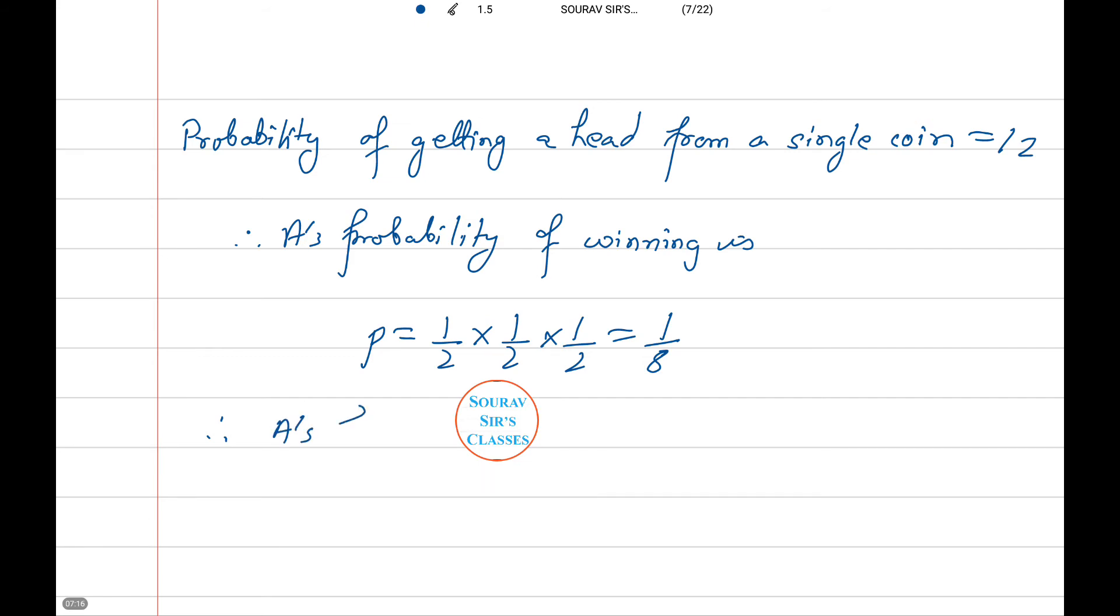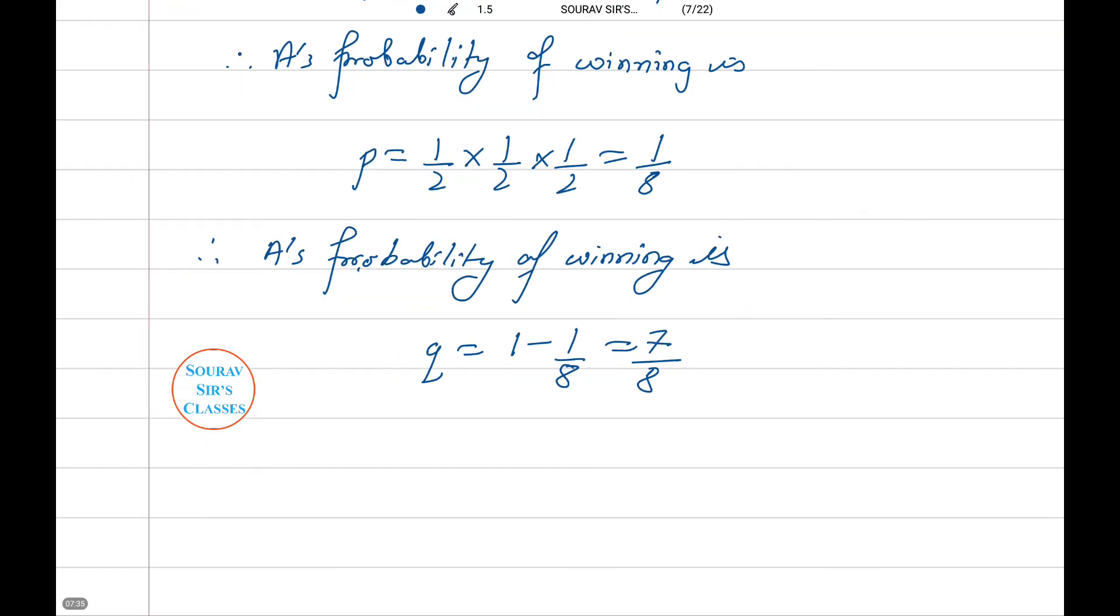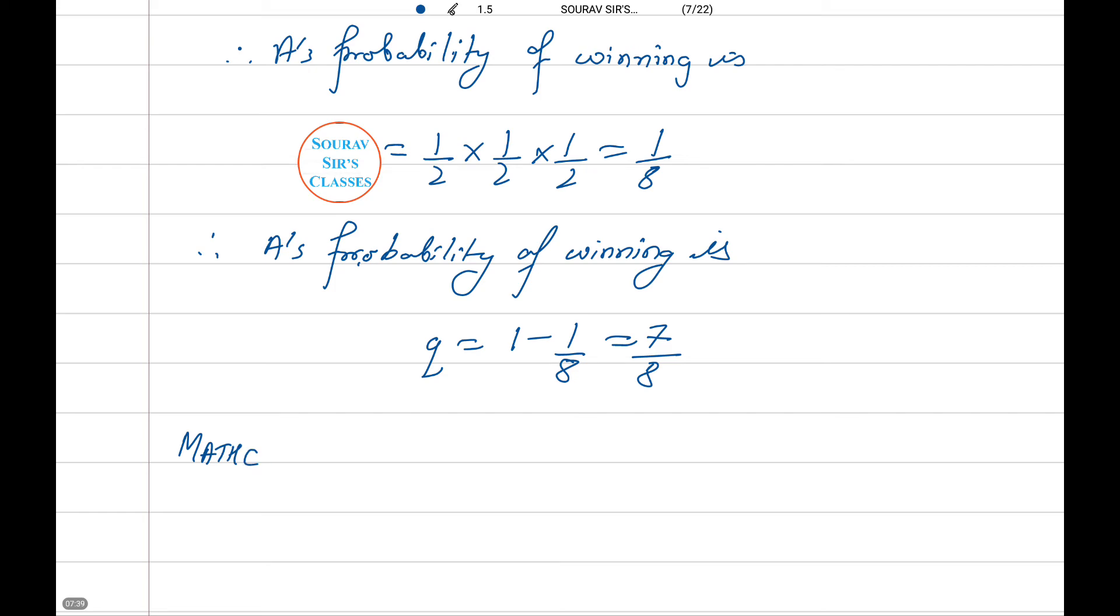Therefore A's probability of losing is Q equals 1 minus 1 by 8, which is equal to 7 by 8. Therefore the mathematical expectation of A equals a into P plus minus b into Q, where a represents the prize amount and P and Q refer to the probabilities of winning and losing respectively.